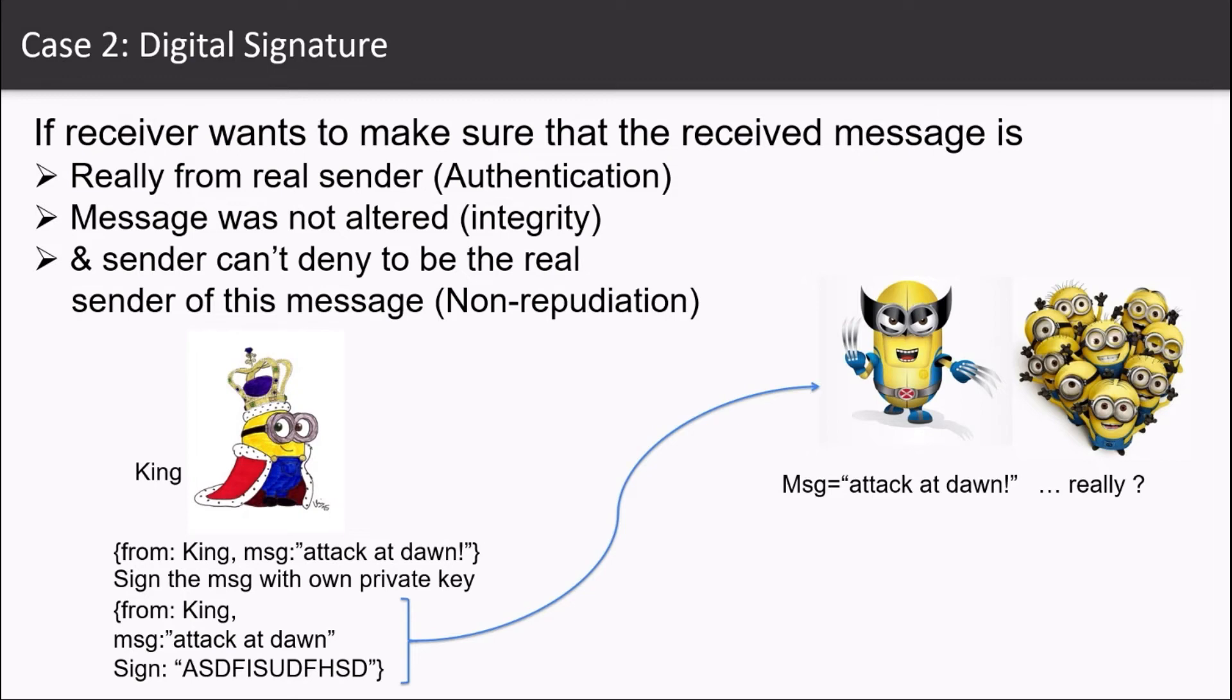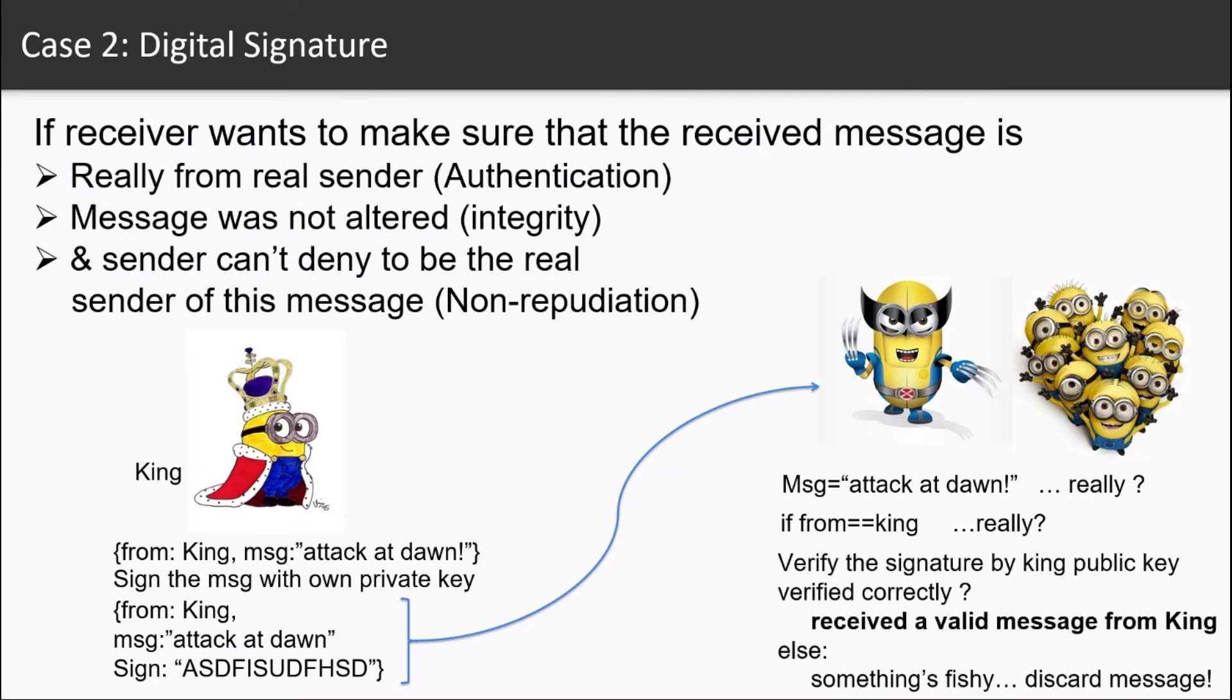So the soldiers' team leader first reads each of the fields of the message as attack at dawn and the from field is king. But now it needs to check, was it really from king or someone else? So it is going to verify the signature by king's public key. If the signature is valid, then the soldier team leader has confirmed three things: the message was really from king, and the message was not altered, and now the king cannot deny to be the real sender of this message.